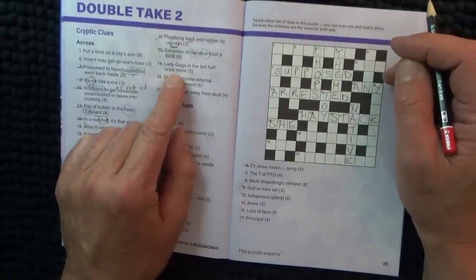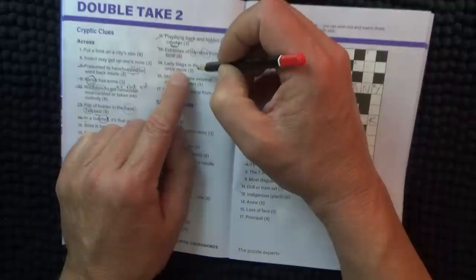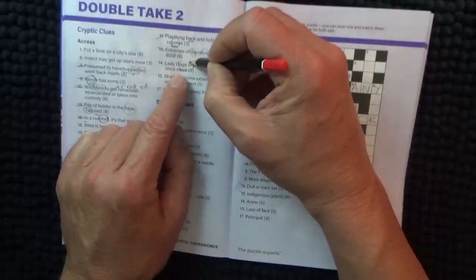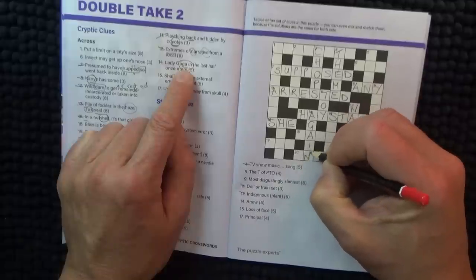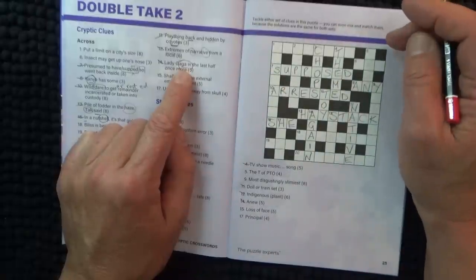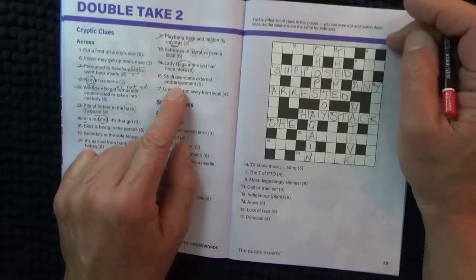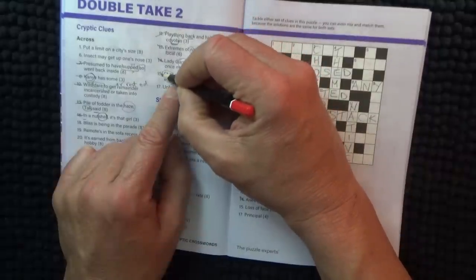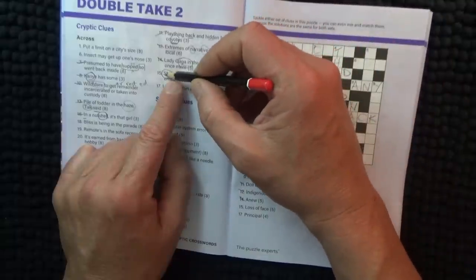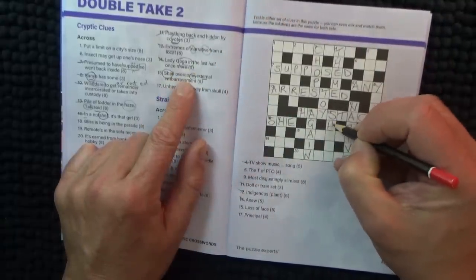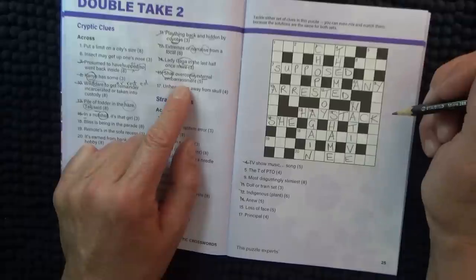Lady Gaga they are in the last half, once more. Once more in the last half. Once more is again or again. And a new is again. Fifteen down, shall overcome external embarrassment and loss of face. External, another external. S-H-A-M-E. Four, shame. Shame, shame.